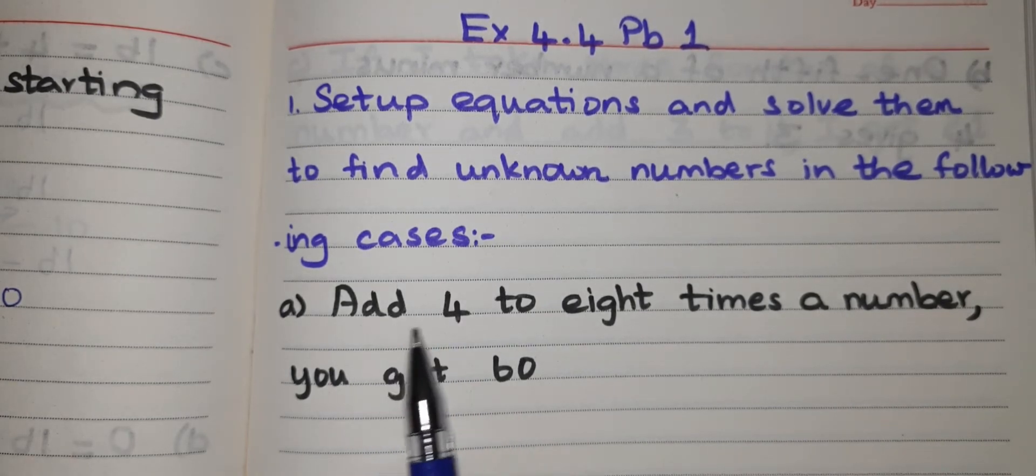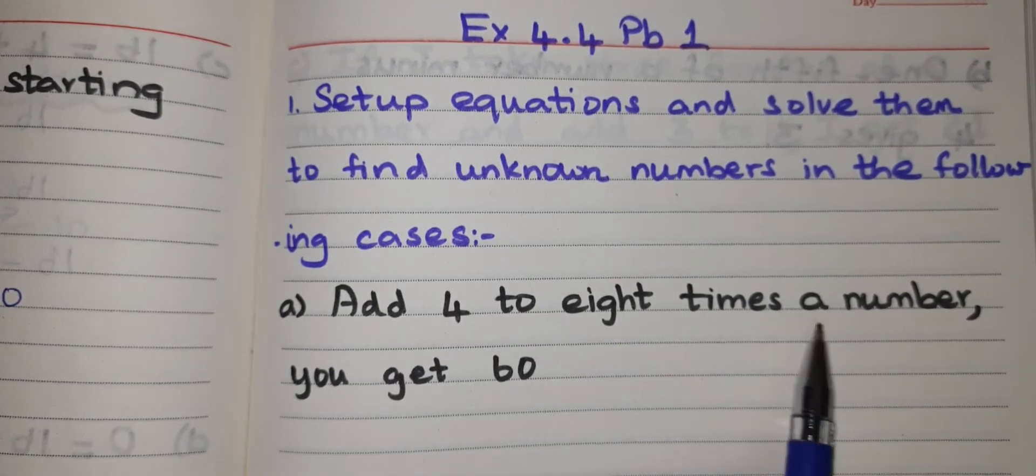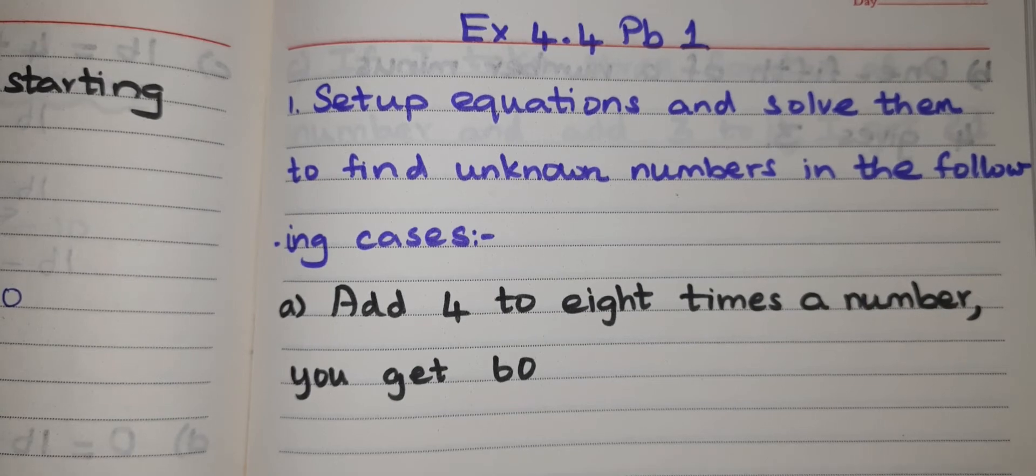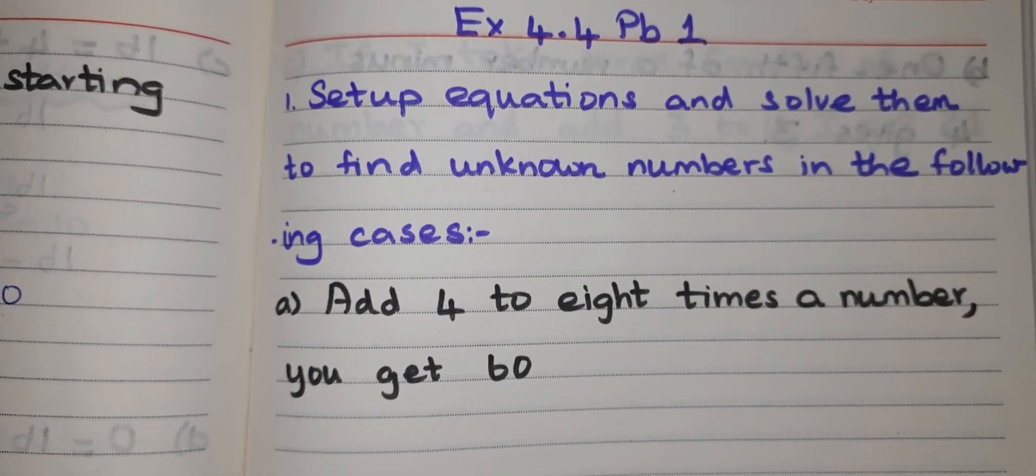First problem, add 4 to 8 times a number you get 60. Already I have given the introduction of forming an equation from the given statement. The video link I have given in the description you can click and check.